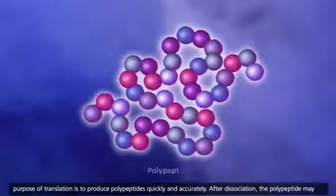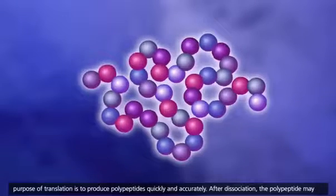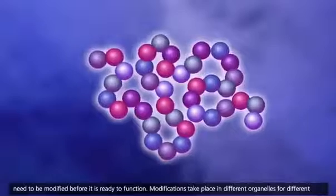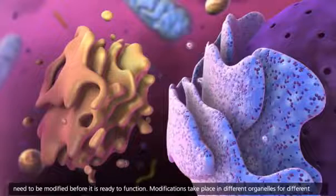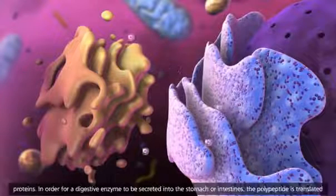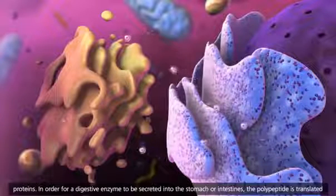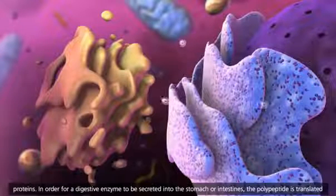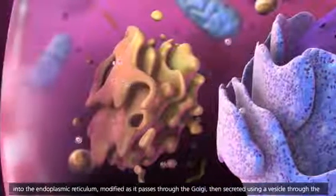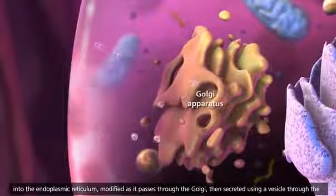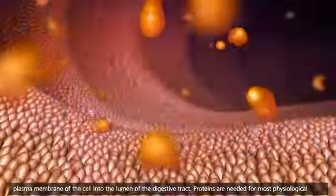The purpose of translation is to produce polypeptides quickly and accurately. After dissociation, the polypeptide may need to be modified before it is ready to function. Modifications take place in different organelles for different proteins. In order for a digestive enzyme to be secreted into the stomach or intestines, the polypeptide is translated into the endoplasmic reticulum, modified as it passes through the Golgi, then secreted using a vesicle through the plasma membrane of the cell into the lumen of the digestive tract.